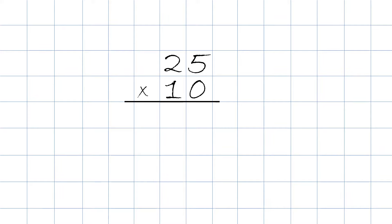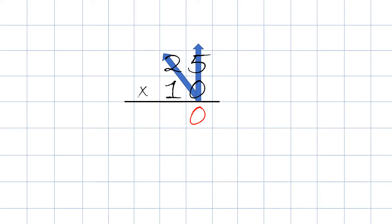The first thing we do is take 0 times 5, and then we're going to take 0 times 2. When we take 0 times 5, the answer is 0. When we take 0 times 2, the answer will also be 0. Next we put a 0 right up here and go 1 times 5, and the answer will be 5.